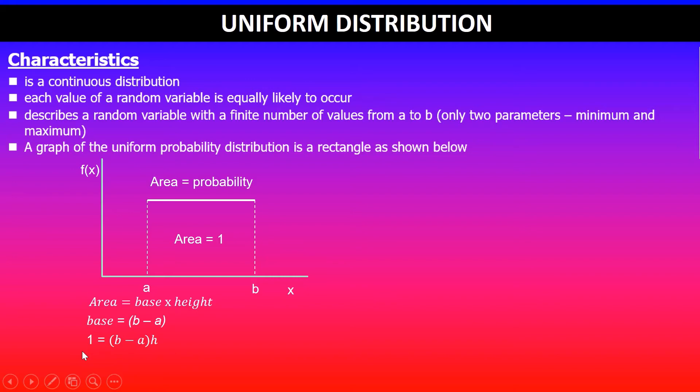I will divide both sides by (b - a), so height is equal to 1/(b - a). That's the height value. Once I've got that, then the probability density function can be written as f(x).